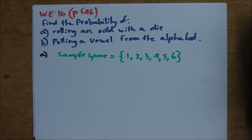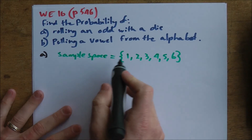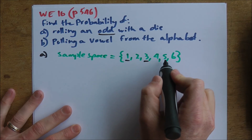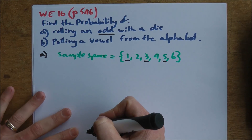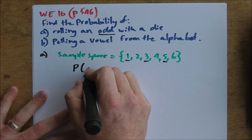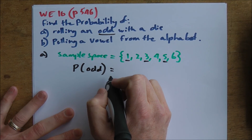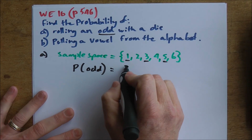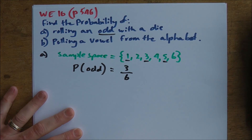The question doesn't necessarily ask you to list the sample space, but here's what we need. Within my sample space, the favourable outcomes are the odd numbers: 1, 3, and 5. So the probability of rolling an odd equals the number of favourable outcomes — which is 3 — divided by the total number of outcomes — which is 6. That gives us 3 over 6, which simplifies to one half.